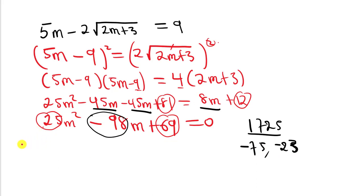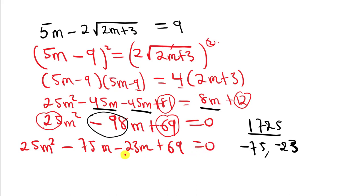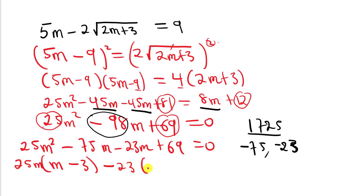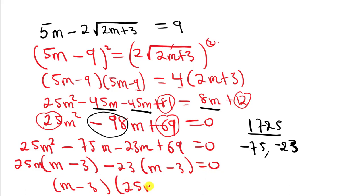In place of the minus 98m, we substitute these two numbers. So we have 25m squared minus 75m minus 23m plus 69 equals 0. Taking the first two terms, the common factor is 25m, leaving m minus 3. Taking the last two terms, the common factor is minus 23, also leaving m minus 3. So we get the factored form: (m minus 3)(25m minus 23) equals 0.